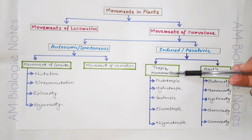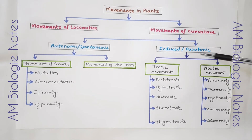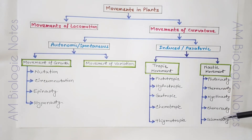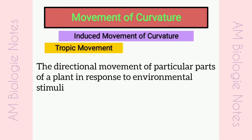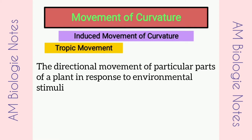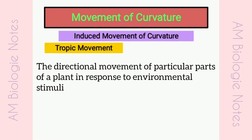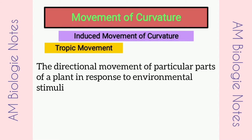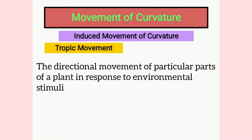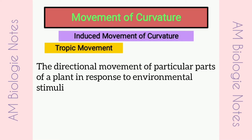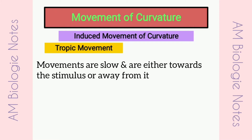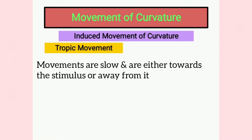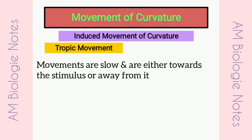Now I will discuss all the types with examples. Tropic movements, or tropism, is the directional movement of particular parts of a plant in response to environmental stimuli. The movements are slow and are either towards the stimulus or away from it. It may be of different types.